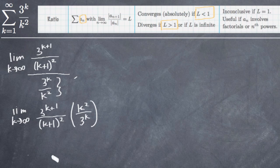So we can reorganize these terms somewhat. The limit as k goes to infinity, we can pair them up, similar terms together. So we'll get 3^(k+1) over 3^k times k squared over (k+1) squared.